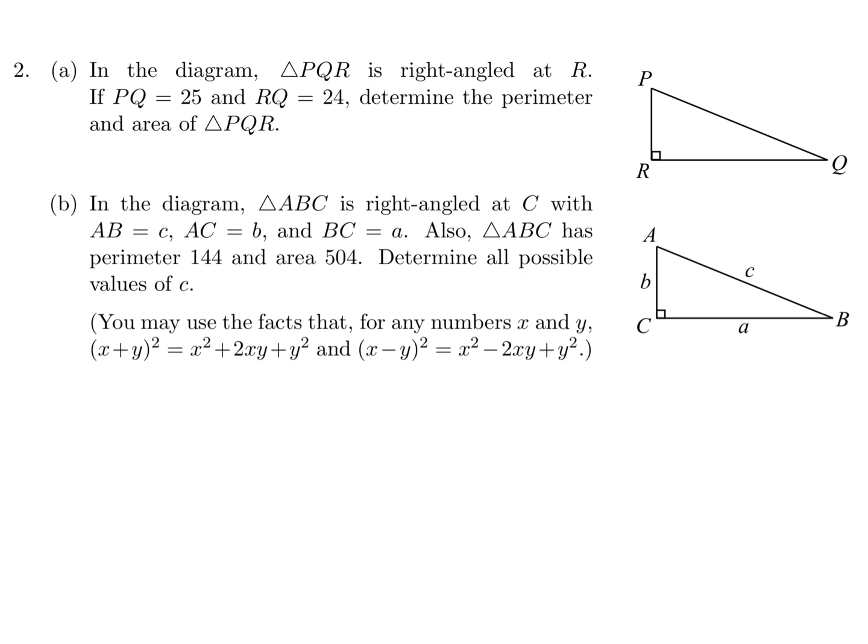In the diagram, triangle PQR is right angle at R. If PQ is 25, RQ is 24, determine the perimeter and area of triangle PQR. Let's label this. PQ is 25, RQ is 24. So with Pythagorean theorem, PR squared plus 24 squared is 25 squared. And when you solve for this, you will get PR equal to 7. So therefore, the perimeter looks to me like 7 plus 24 plus 25, which is 56. And then the area is 1 half base times height. So 1 half base is 24, height is 7, and that is 84.